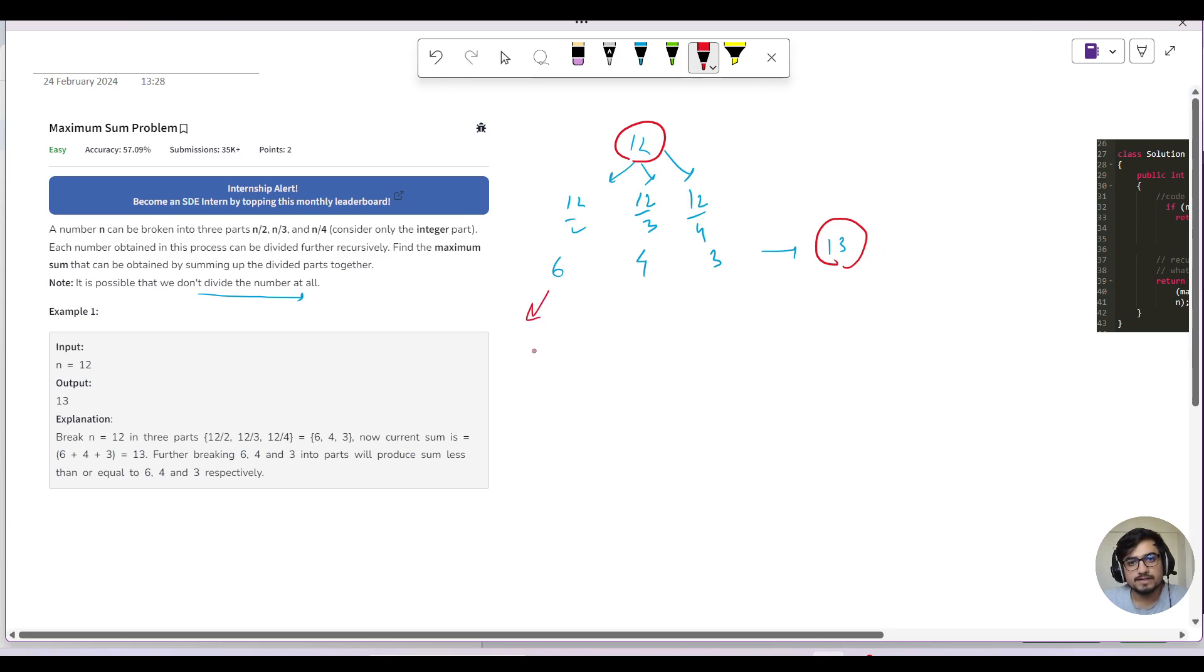Then we will recursively divide again. So 6 by 2, 6 by 3, and 6 by 4, which will give us 3, then 2, and 1. Similarly, we will divide 4 and upon division we will get the values as 2, 1, 1. I have written it, I am just copying and pasting it here. So for 3, we will again 3 by 2, that is 1; 3 by 3, that is 1; 3 by 4, that is 0, right?